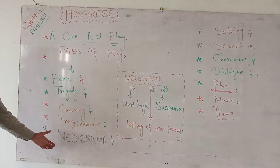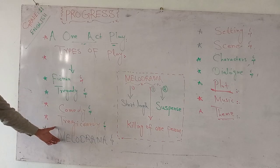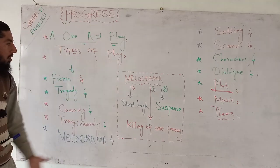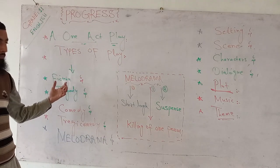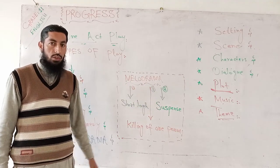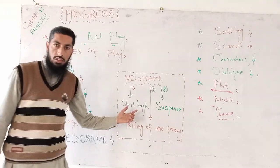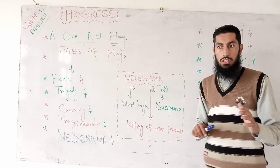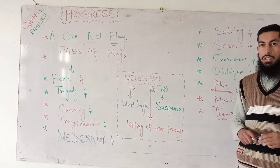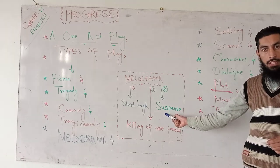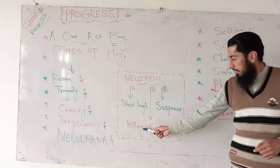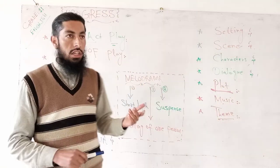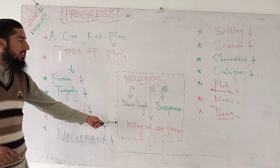Next comes melodrama. We are going to deal with melodrama. The play 'Progress' is an apt example of melodrama. There are three main elements of melodrama: first, it has a short length — not as short as a story, but shorter; second, there is suspense; and third, the killing of one person — a major character, hero, or heroine.